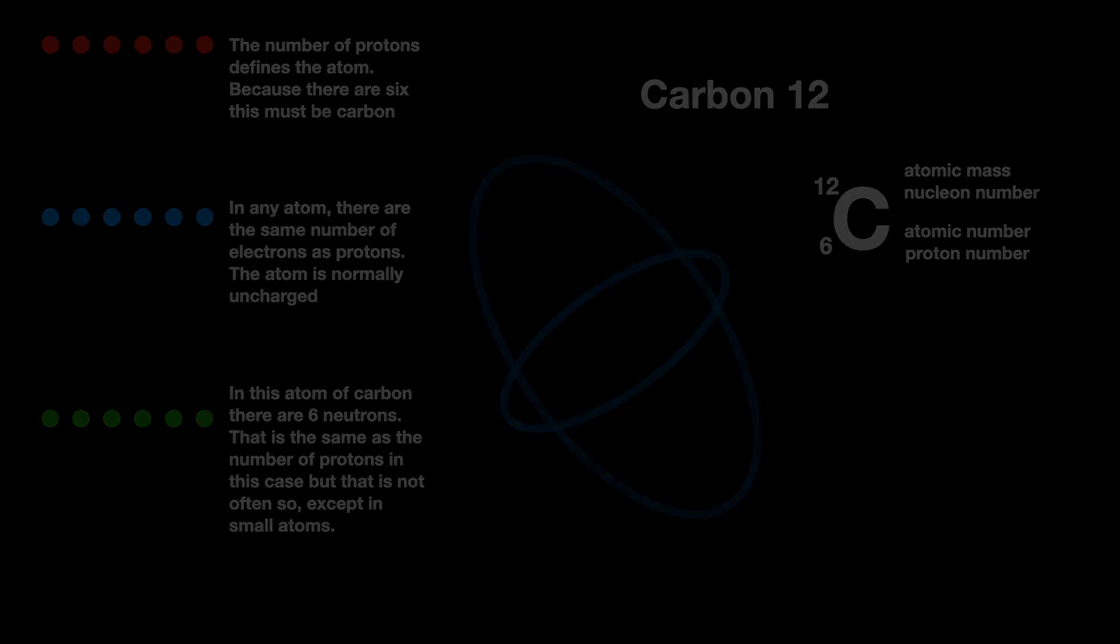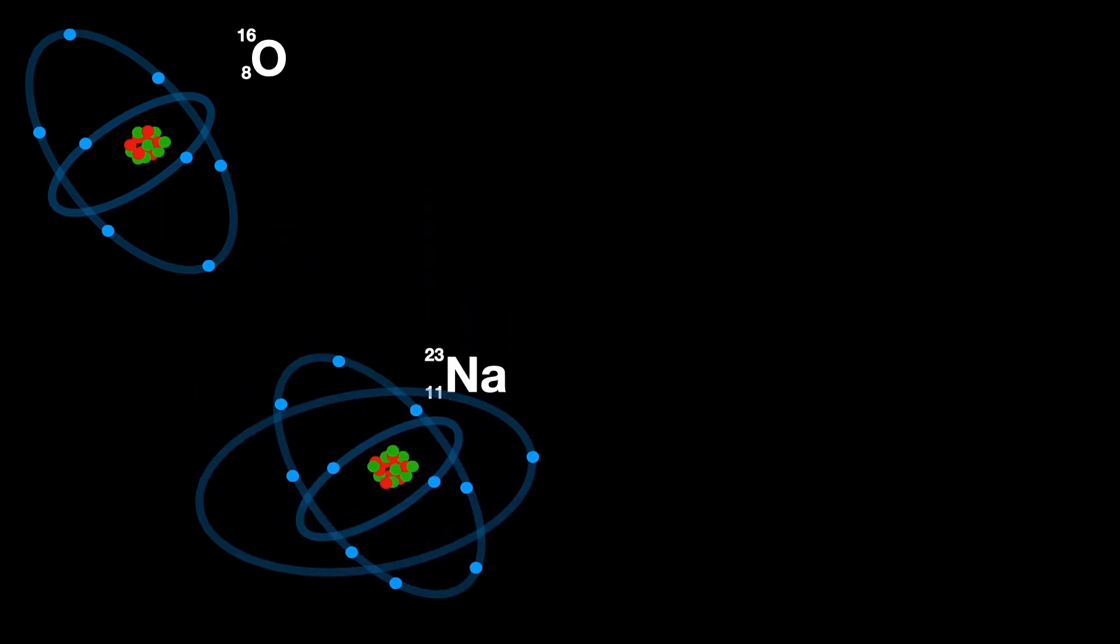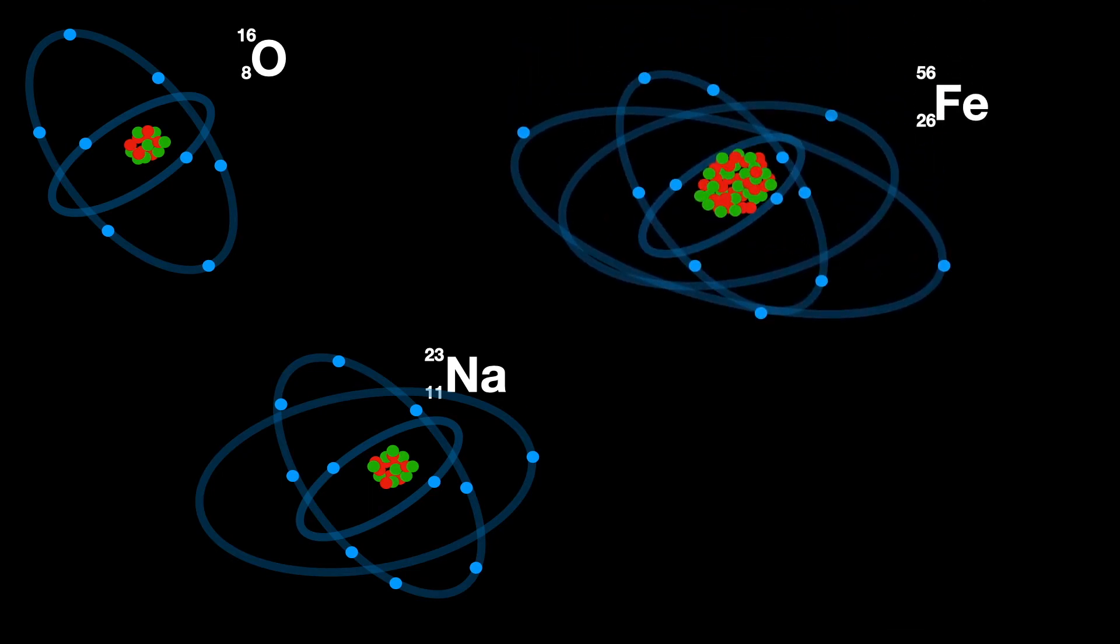To explain this more thoroughly, let's follow it up with three examples: three more elements—oxygen, sodium, and iron. Oxygen must have eight protons because it shows eight, so that's the atomic number. To balance the charges, it must also have eight electrons. The atomic mass is 16, but we've accounted for eight protons, so it must be 16 minus eight: eight neutrons.